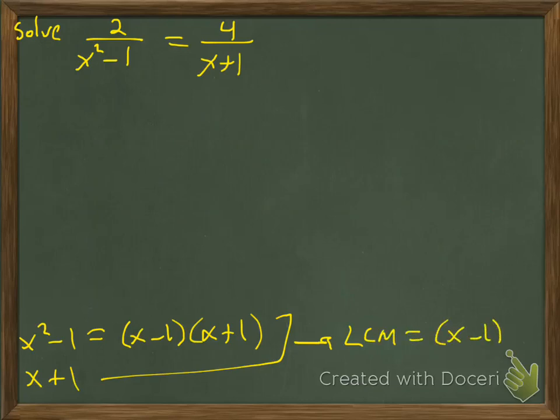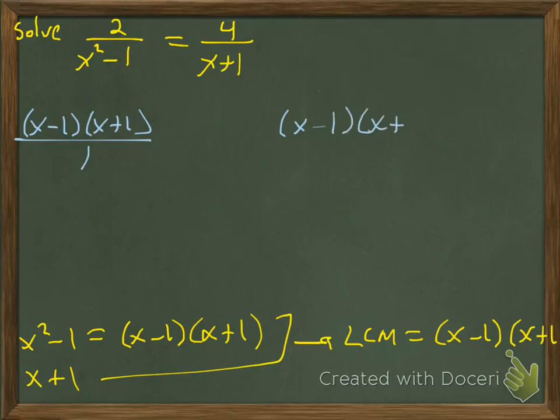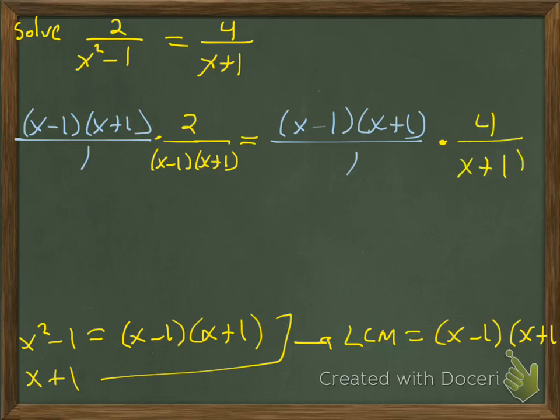So (x-1)(x+1) over 1, and on the other side of the equation, (x-1)(x+1) over 1. Then I'm going to factor that denominator. 2 over x²-1 becomes 2 over (x-1)(x+1) equals 4 over (x+1) times (x-1)(x+1). Nice stuff happens. Everything on the left cancels but the 2.